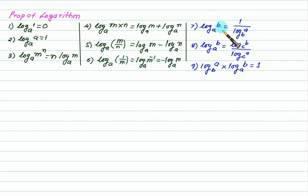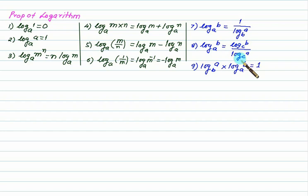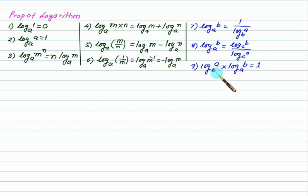If we have division we can write it as subtraction, and log of 1/m equals negative log of m to base a. We can change the base: log of b to base a can be written as 1 upon log of a to base b, or using a common base c. Also, log of a to base b multiplied by log of b to base a always equals 1.